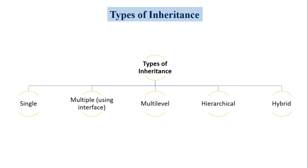Today we are going to discuss one important type of inheritance: multilevel inheritance. There are 5 types of inheritance supported in C# .NET: single inheritance, multiple inheritance, multilevel inheritance, hierarchical inheritance, and hybrid inheritance. In the previous lecture we discussed single inheritance, and today we are going to discuss what is meant by multilevel inheritance and its example program.